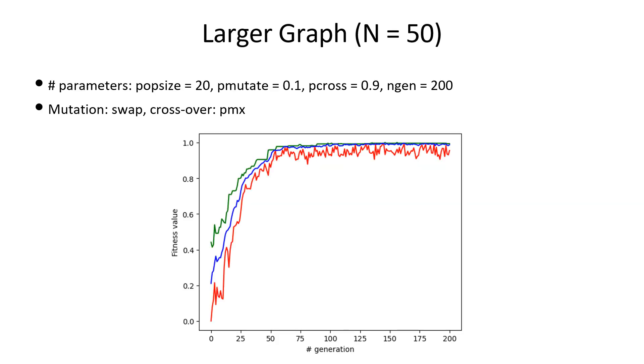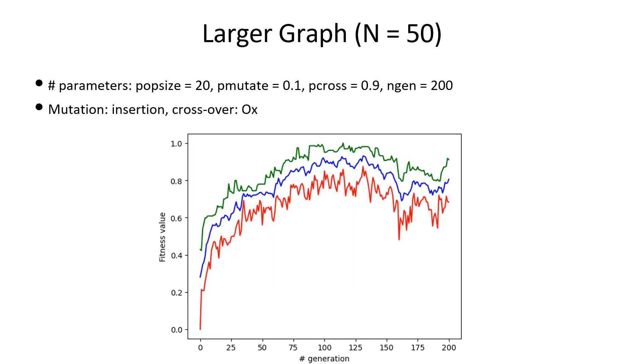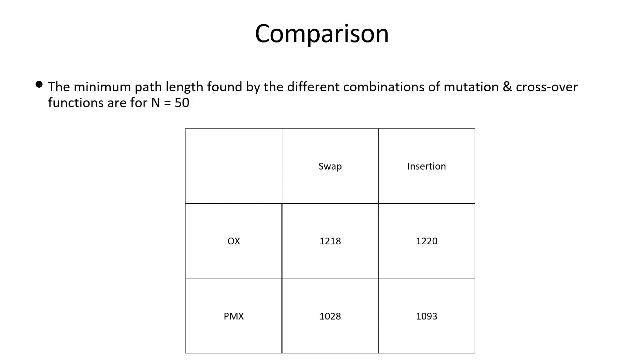Further experiments can be conducted varying different parameters. Here the graph size is increased to 50. The genetic algorithm is run for 200 steps. These and the next slides show different combinations of mutations and crossover methods. Sometimes the max fitness comes down because elitism is not applied. Here the swap mutation and PMX crossover gives the best solution.